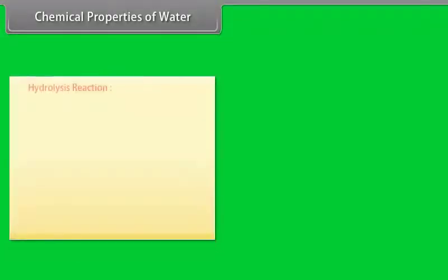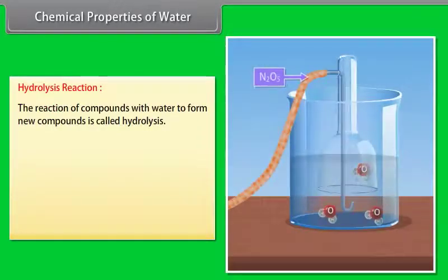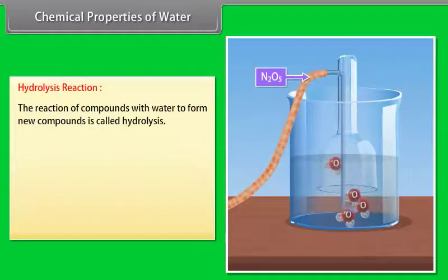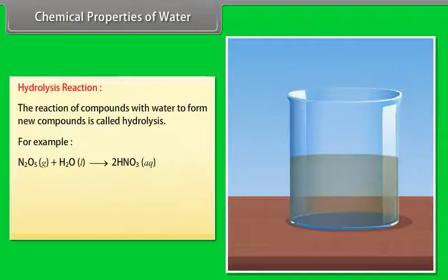Chemical properties of water - Hydrolysis reaction: The reaction of compounds with water to form new compounds is called hydrolysis. For example, dinitrogen pentoxide reacts with water to form nitric acid.